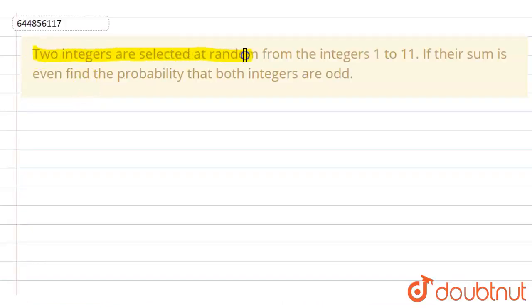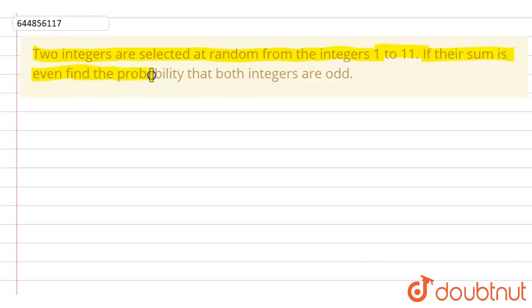Hello students. The question is: two integers are selected at random from the integers 1 to 11. If their sum is even, find the probability that both integers are odd.